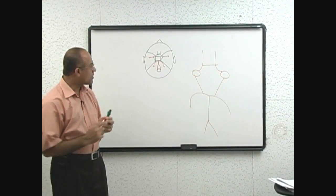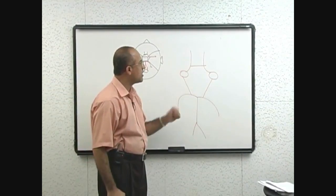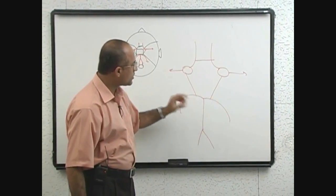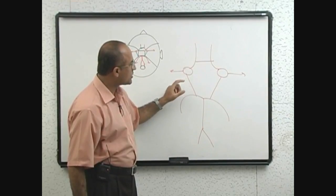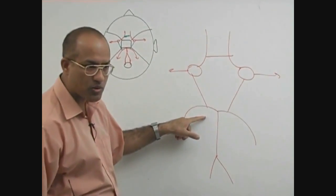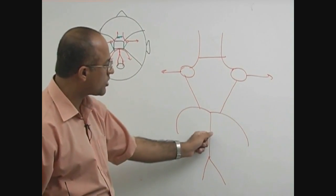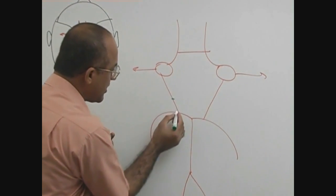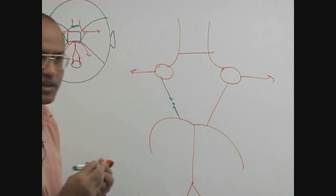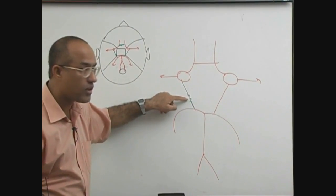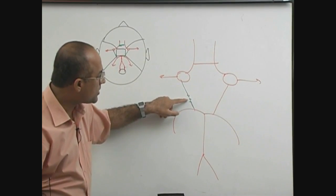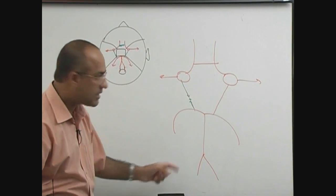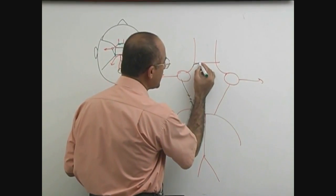Now, what is the advantage of this ring? The advantage is that the posterior communicating artery is a connection between the anterior circulation and posterior circulation. For example, if the posterior circulation is blocked, blood from the anterior circulation comes up and they meet in the posterior communicating artery.